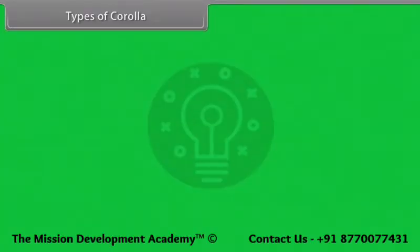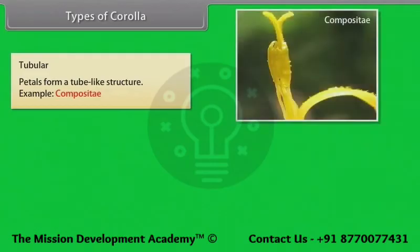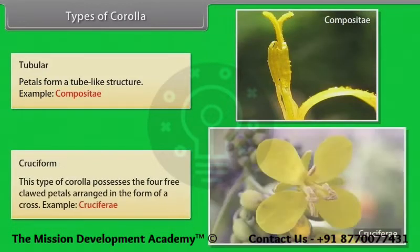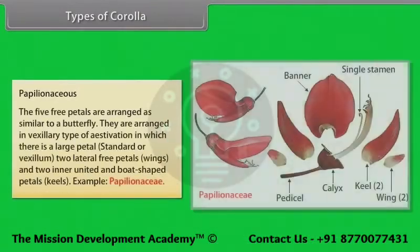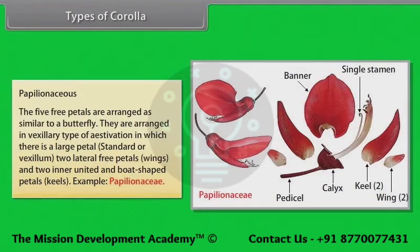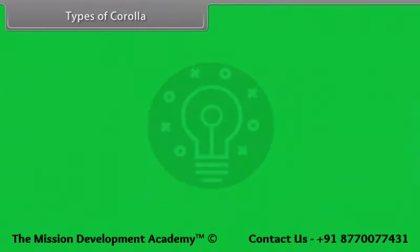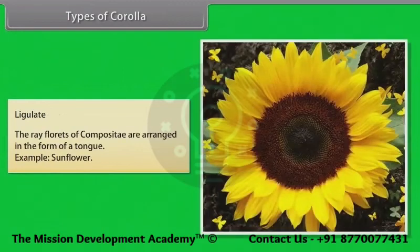Types of corolla: Tubular — petals form a tube-like structure, example Compositae. Cruciform — possesses four free petals arranged in the form of a cross, example Cruciferae. Papilionaceous — five free petals arranged similar to a butterfly in vexillary estivation: a large standard (vexillum), two lateral wing petals, and two inner united boat-shaped keel petals, example Papilionaceae. Ligulate — ray florets arranged in the form of a tongue, example sunflower.